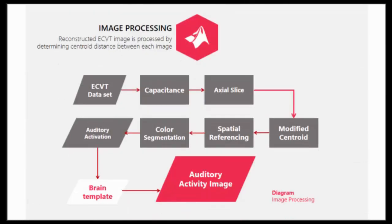In the image processing pipeline, we gather the capacitance values of the brain from the ECVT datasets. We obtain an axial slice and a sagittal slice. ECVT produces a volumetric image in x, y, and z planes. To get the permittivity matrix, we apply an iterative linear back projection. The ECVT image contains 32 slices on each axis — 32 on x, 32 on y, and 32 on z.